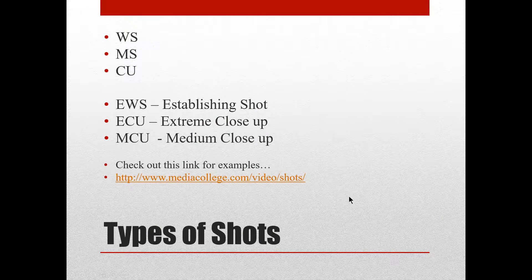Now let's talk about shot types — common language photographers and filmmakers use. We have an establishing wide shot, which is a super wide shot of an entire building or campus. In a movie, the first scene is usually a wide shot of the location — that's called an establishing or extreme wide shot. Very wide, lots of detail, with people as just little dots on the screen.